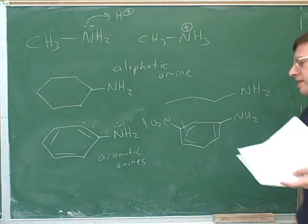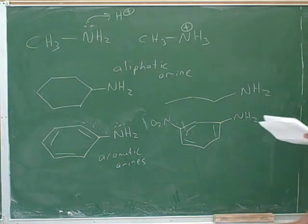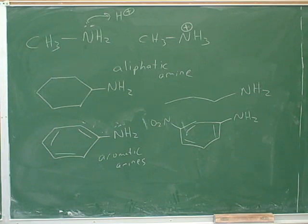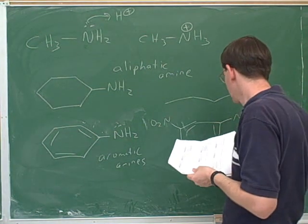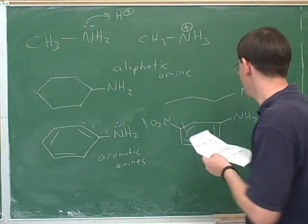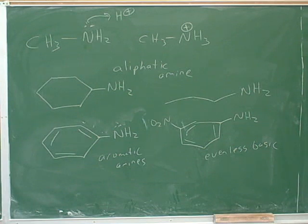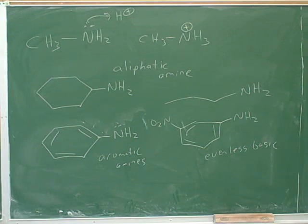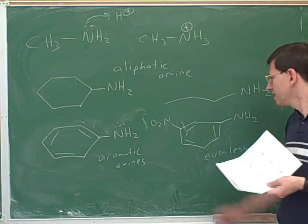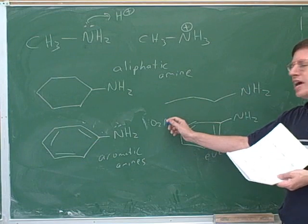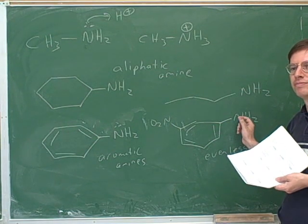Let's say I add a nitro group to the benzene ring. Is this nitro group going to make the amine more or less basic? It's going to make it less basic. That's the right answer. How does the nitro group make it less basic? Because the nitro group has a positive charge. Is this nitro group electron donating or withdrawing? It's withdrawing. Would that tend to make this more or less basic? It would make it less basic.